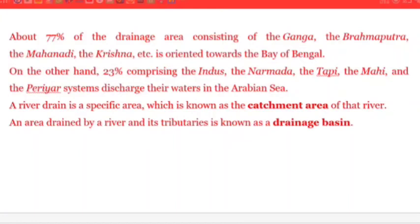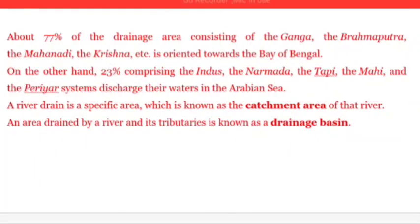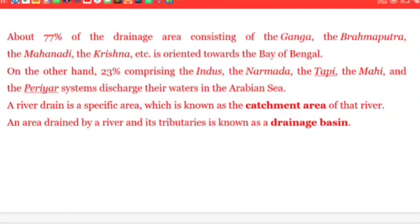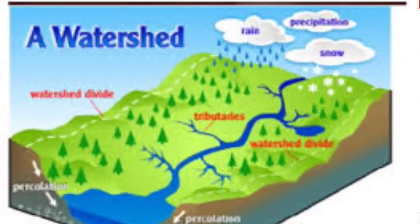What is the catchment area of a river? A river drains a specific area which is known as the catchment area of the river. An area drained by a river and its tributaries is known as a drainage basin. The boundary line separating one drainage basin from another is called the watershed.